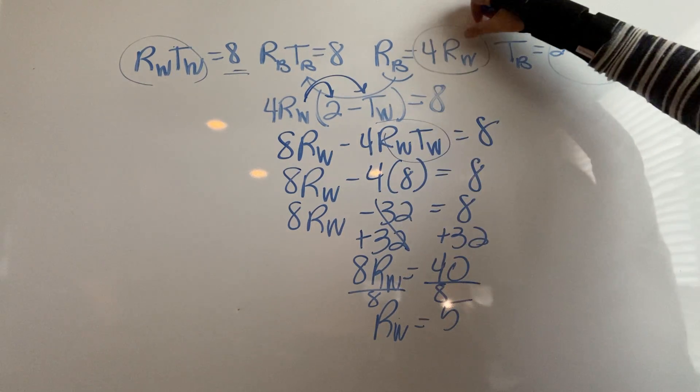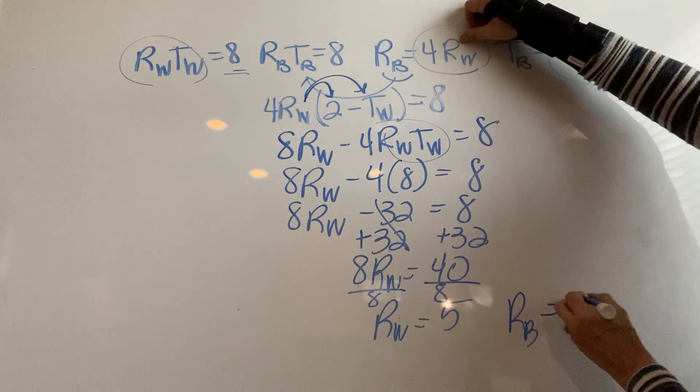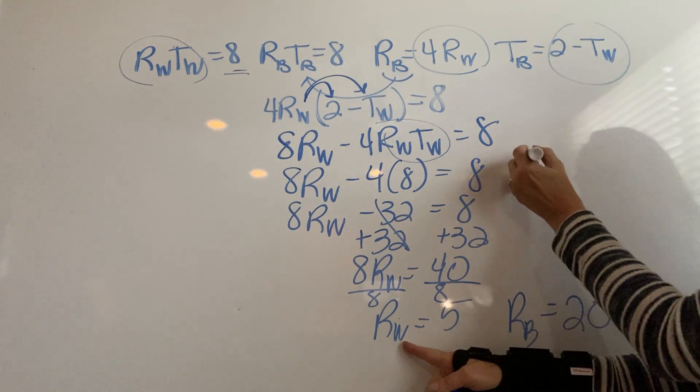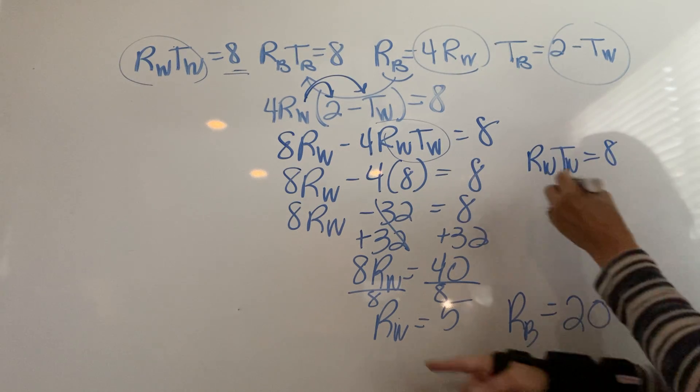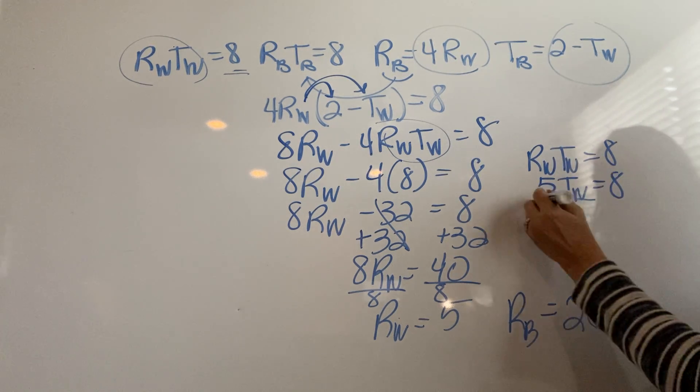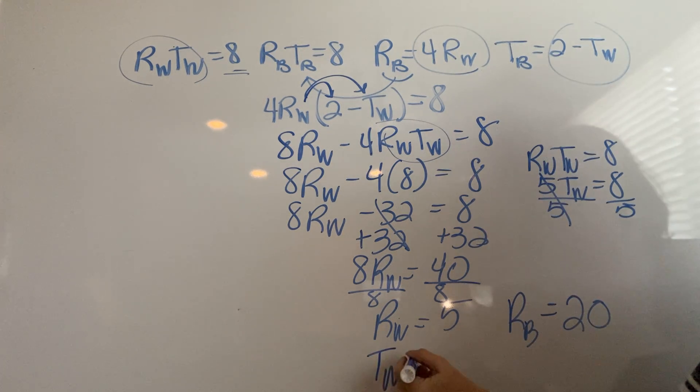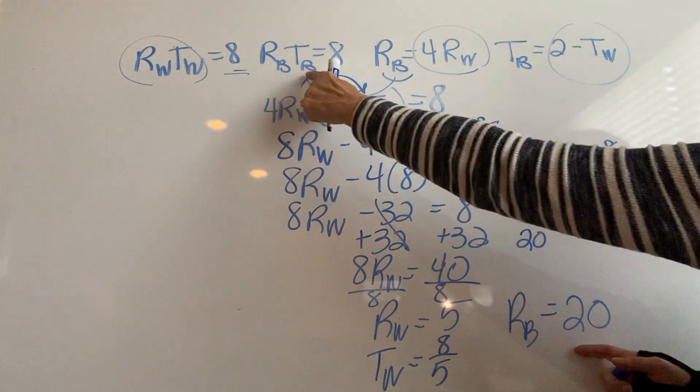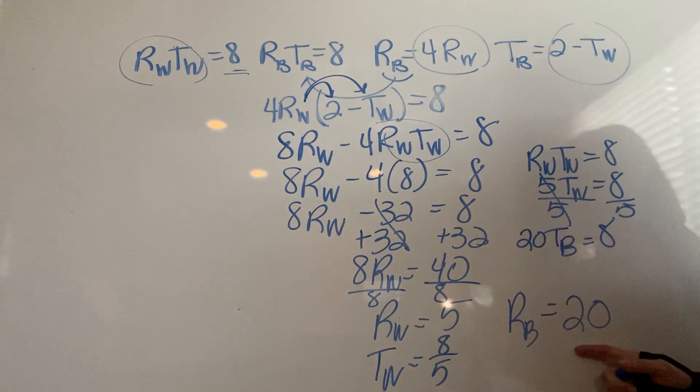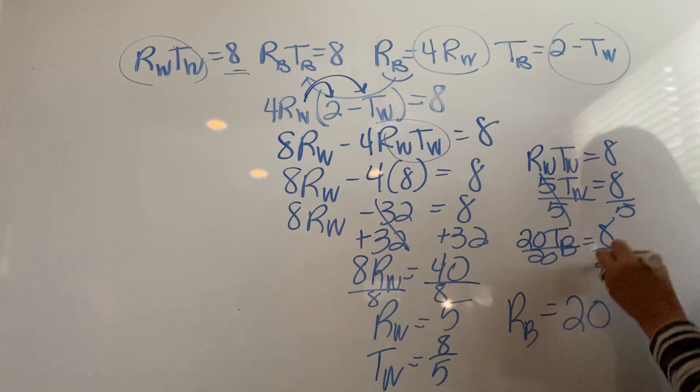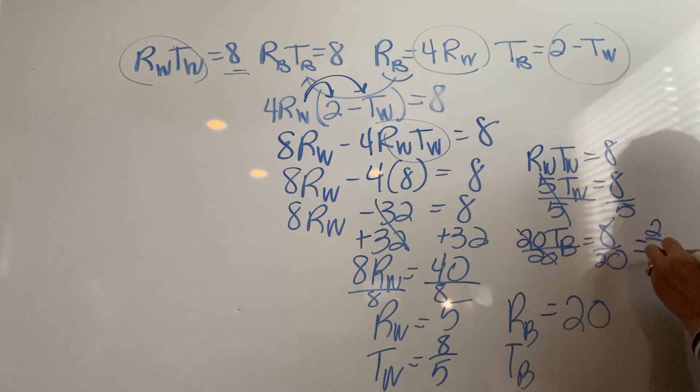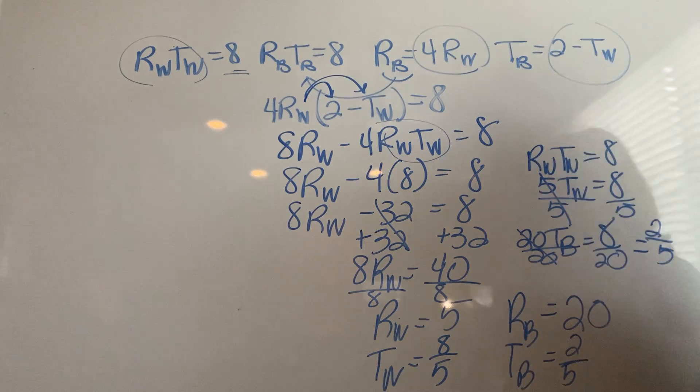So I've got one of them. If RW is 5, then I know that RB is 4 times that, so his rate was 20. Now I need to solve for TW. I have RWTW equals 8. For RW I'm going to put in 5, I divide by 5, so TW is 8 fifths. I'm going to put this into this equation and solve. So 20 times TB equals 8. I divide by 20 on both sides, so that TB is 8 over 20, but both of them are divisible by 4, so I'll simplify that to 2 fifths.